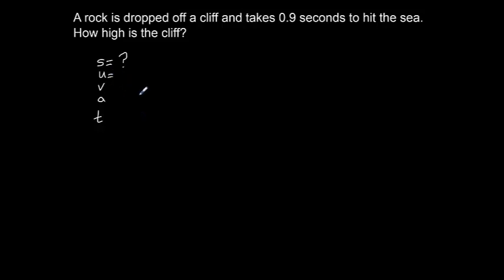U is our initial velocity. The rock is being held and then released. At the beginning of its journey, it has a velocity of 0 metres per second. V is the final velocity as the rock hits the water. The question doesn't ask us to find this out, nor does it tell us what this is. So I'm going to put a cross there to say we don't care about what V is in this question. A is the acceleration due to gravity, that is 9.81 metres per second squared. And the time is given to us in the question, 0.9 seconds.